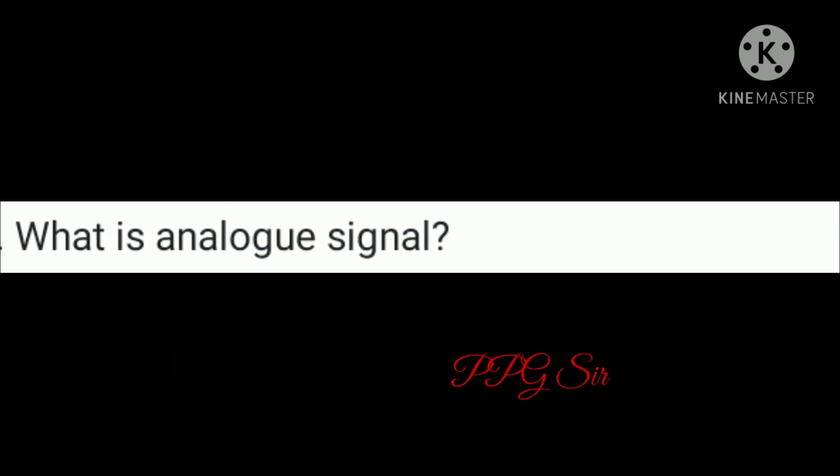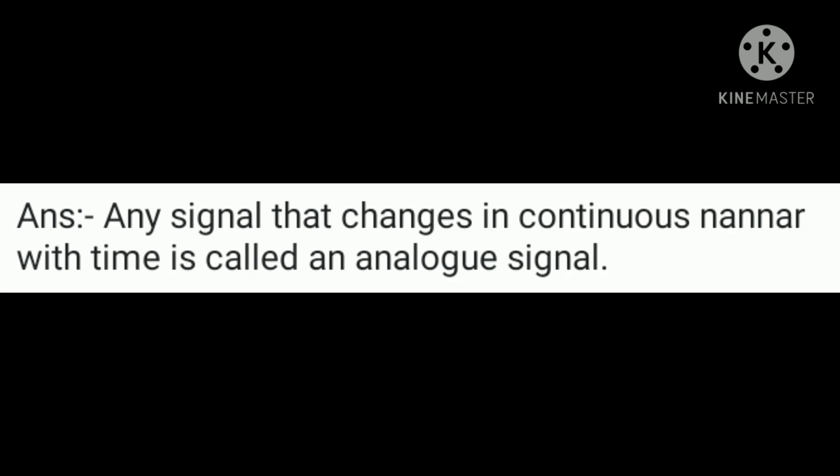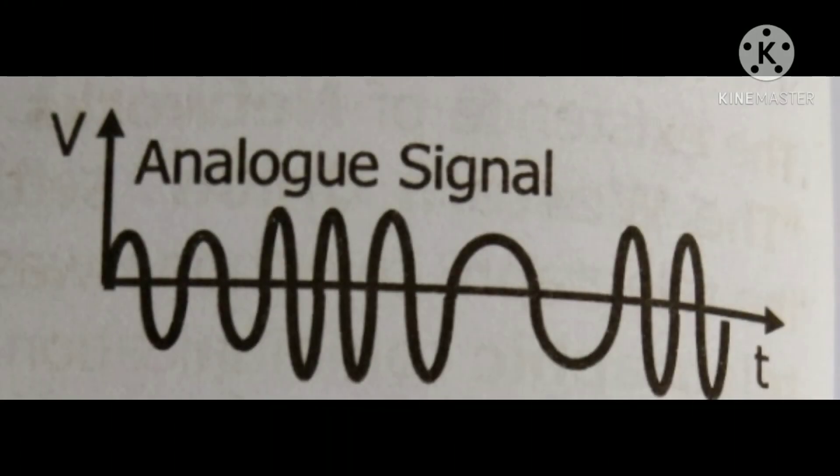What is an analog signal? Any signal that changes in a continuous manner with time is called an analog signal. This is an example of an analog signal.